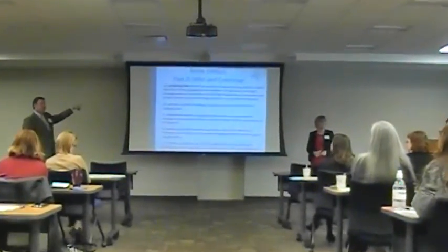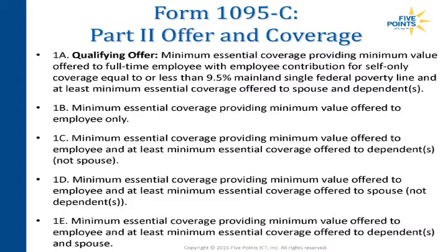Since the 1095-C is specific to each individual, you'll need to understand which individuals have a spouse on the plan and which don't. One employee where you offer benefits to the spouse who has no benefits elsewhere — you may be able to use 1A. The next employee where you don't offer to the spouse because they have benefits elsewhere — you'll have that difference on each one.